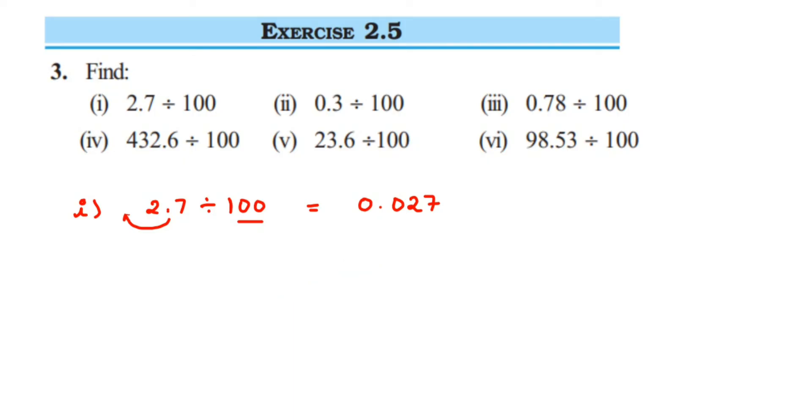For the whole question, you just have to move the decimal point to the left side two places. So 0.3 divided by 100, move the decimal two places to the left. One zero is there, so we have to put one more zero. So 0.003 is the answer. Then the next one, third question: 0.78 divided by 100. Again, this decimal will go to the left side two places. Only zero is there, so we have to put one more zero. So 0.0078.